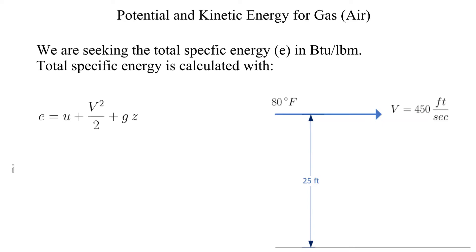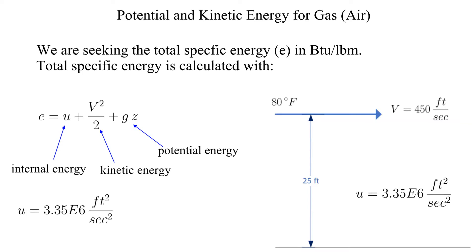Total specific energy is comprised of three energies: internal energy, kinetic energy, and potential energy. The internal energy is provided, so all that is left is to find the kinetic and potential energies.